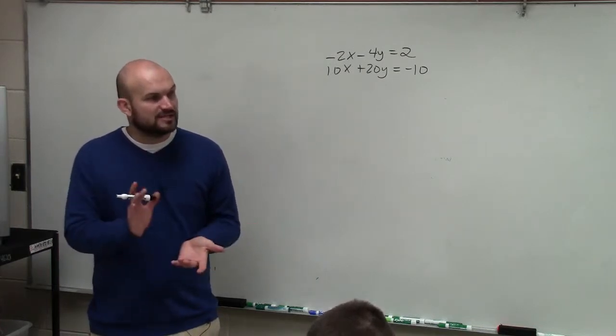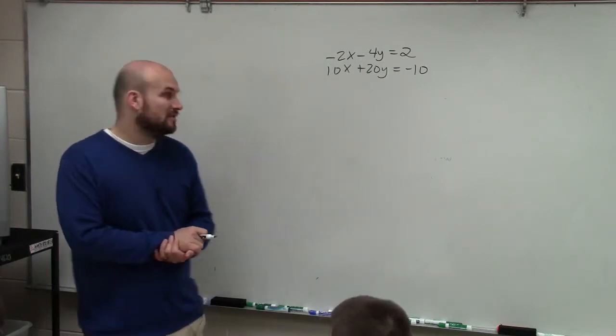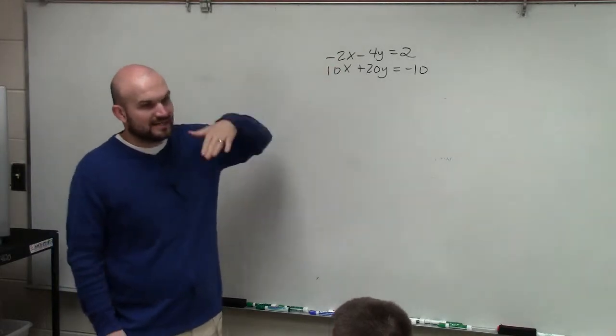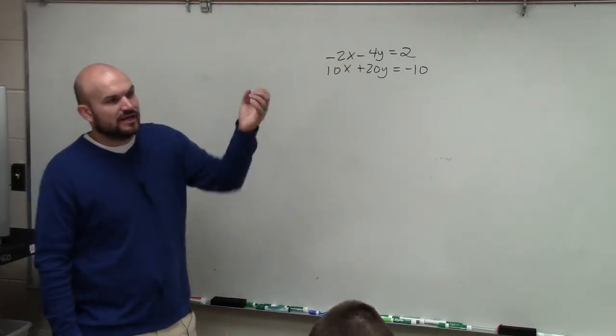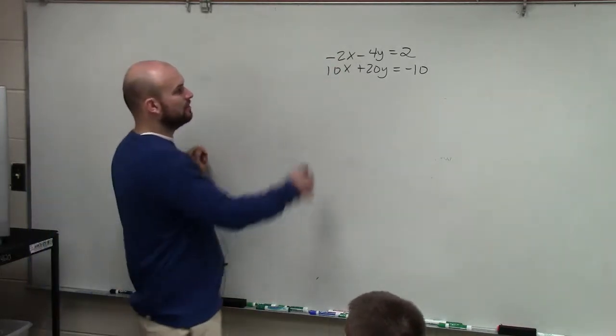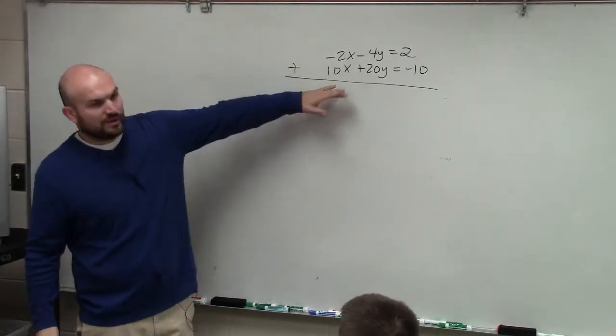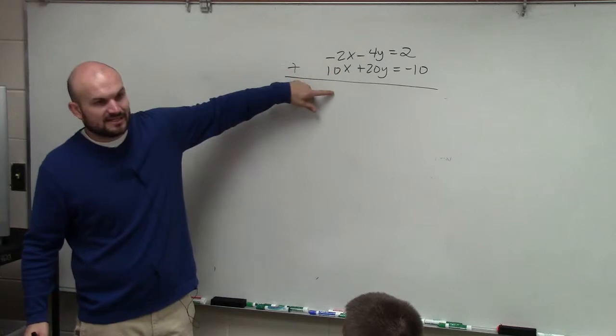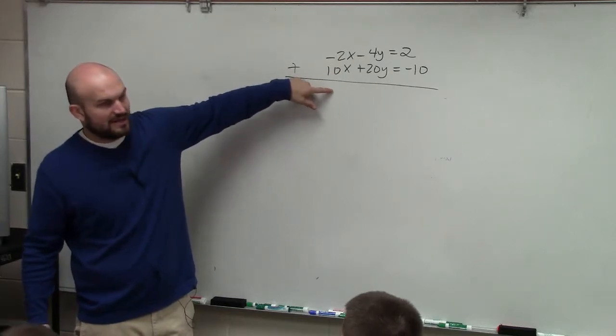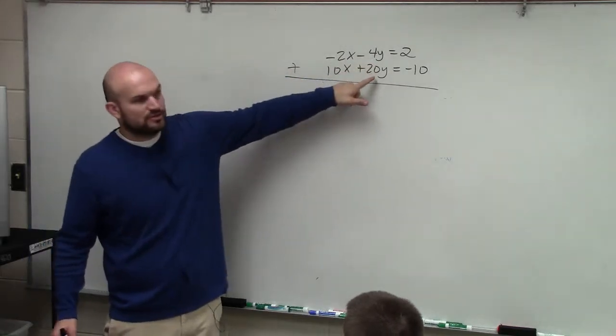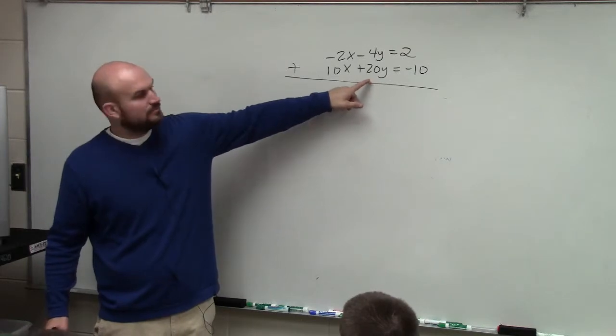Basically for elimination, what we're doing is adding or subtracting our equations to get a coefficient of 0. So let's do this in our head. If I was to add these two equations, would -2x + 10x give me 0x? No. Would -4y + 20y give me 0y? No.